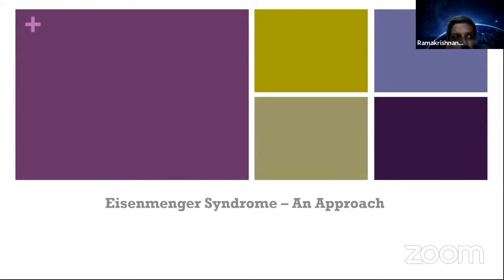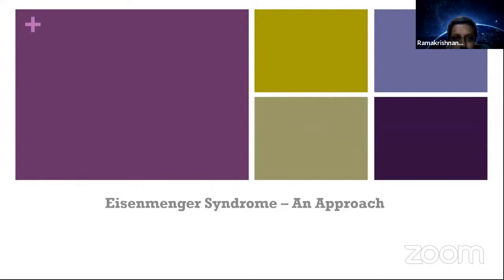TOF with absent pulmonary valve: a rare condition. Generally presents with cardiomegaly. There will be tetralogy-like features, but with cardiomegaly and heart failure possible. The most dominant finding will be a to-and-fro murmur — ejection systolic murmur followed by an early diastolic murmur of PR.